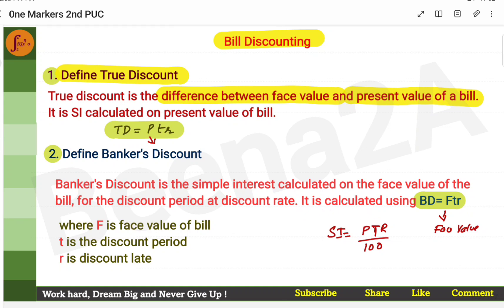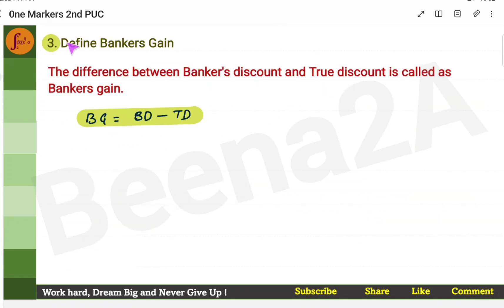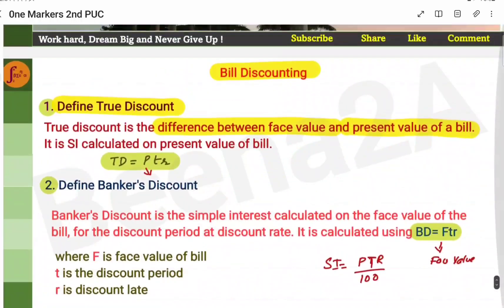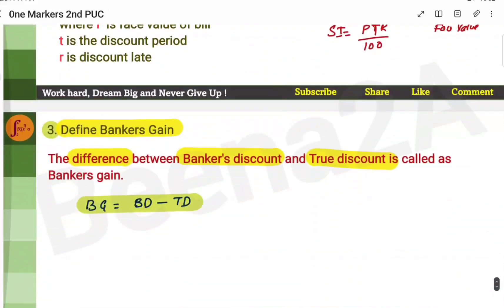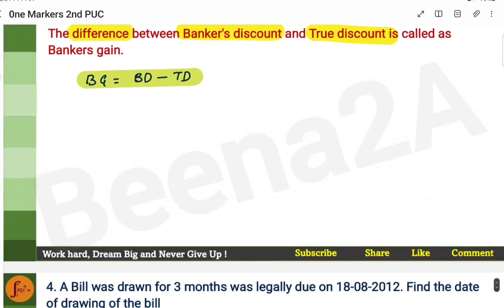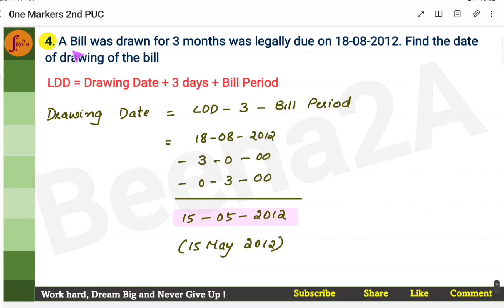Third, define Banker's Gain. The difference between Banker's Discount and True Discount is Banker's Gain, so BG = BD − TD. We need to remember all three definitions: True Discount, Banker's Discount, and Banker's Gain.